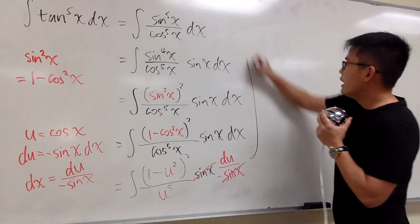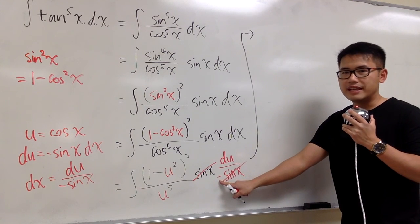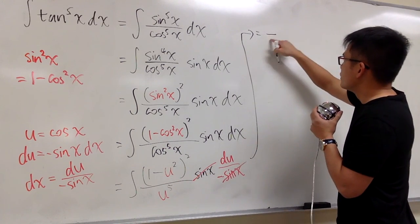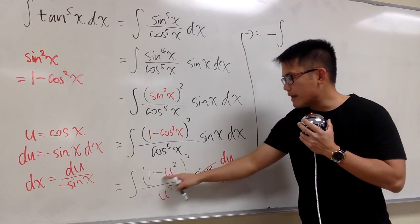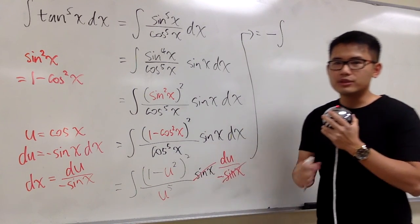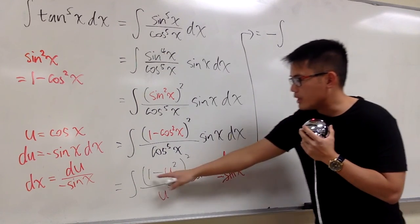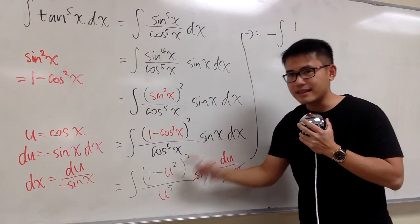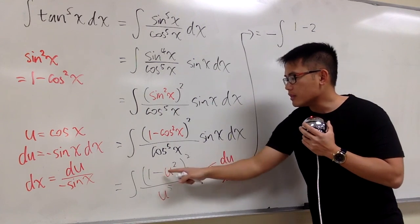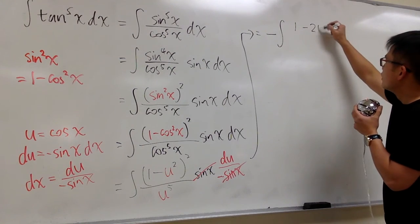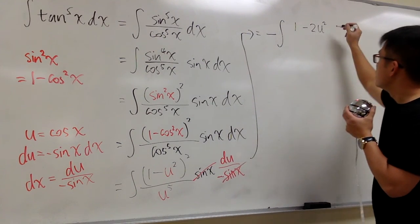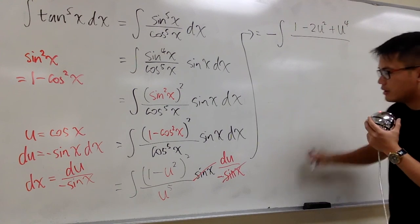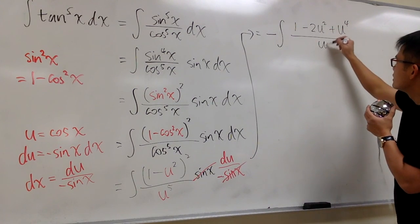So we have negative integral of (1 minus u squared) squared, over u to the fifth power, du. We expand the numerator: 1 squared is 1, minus 2 times 1 times u squared gives minus 2u squared, plus u squared squared which is u to the fourth power. So the numerator is 1 minus 2u squared plus u to the fourth power, all over u to the fifth power.